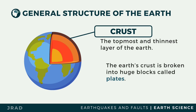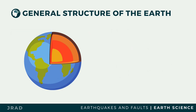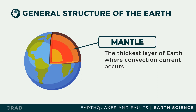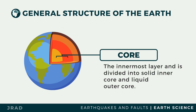Some plates carry continents, which are mostly made of granite, and others carry oceans, which are made of basalt. Beneath the Earth's crust are other layers such as the mantle, which is the thickest layer of the Earth where convection currents occur, and the innermost layer, which is divided into a solid inner core and a liquid outer core.